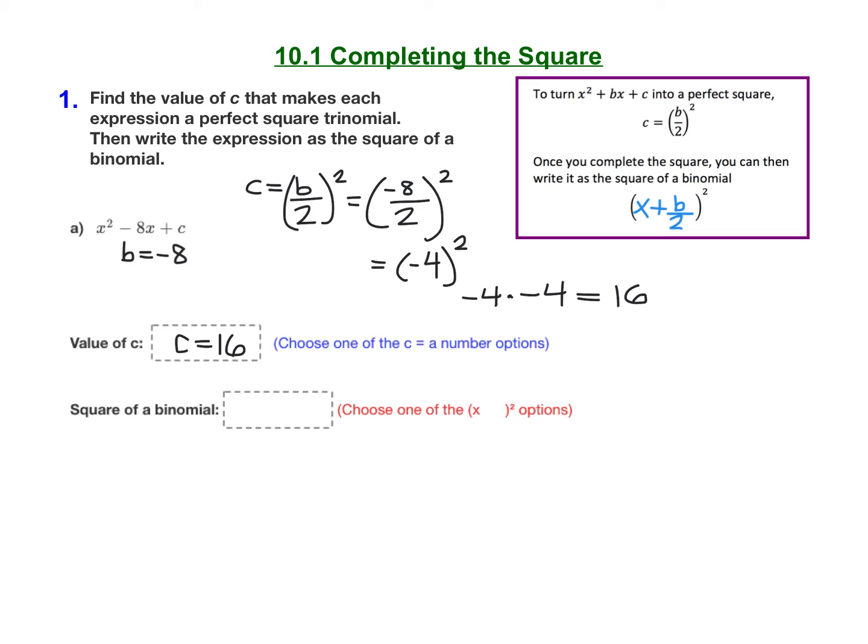Now that I know what c is, I'm ready to factor it into the square of a binomial. We know that it factors to x plus whatever b over 2 was before we squared it, and here b over 2 was negative 4.